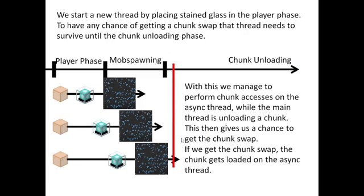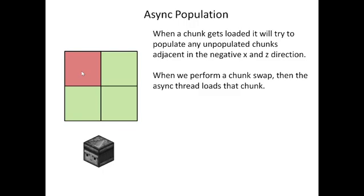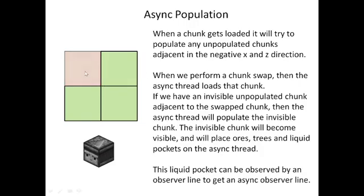Once we have a chunk swap, we have loaded a chunk on the async thread. Loading any chunk causes it to try to populate adjacent chunks in the negative axis direction. If we perform a chunk swap on a chunk that has an invisible chunk next to it, the invisible chunk gets populated — since an invisible chunk is just an unpopulated chunk. This population also happens on the async thread. It places liquid pockets or other blocks, and you can use observers to observe them, giving you the asynchronous observer line. That's basically how it works.